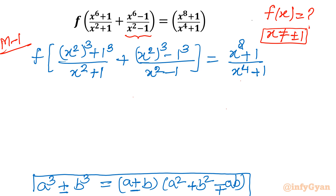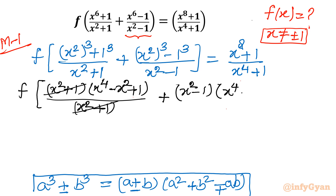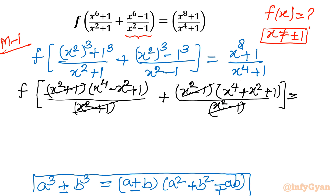For the first term, f of [(x²+1)(x⁴-x²+1)]/(x²+1): since a+b = x²+1, in the second bracket a² = x⁴, minus ab = -x², plus b² = 1. The denominator x²+1 cancels. For the second term, a³-b³: (x²-1)(x⁴+x²+1)/(x²-1). The denominator cancels. The right hand side remains (x⁸+1)/(x⁴+1).